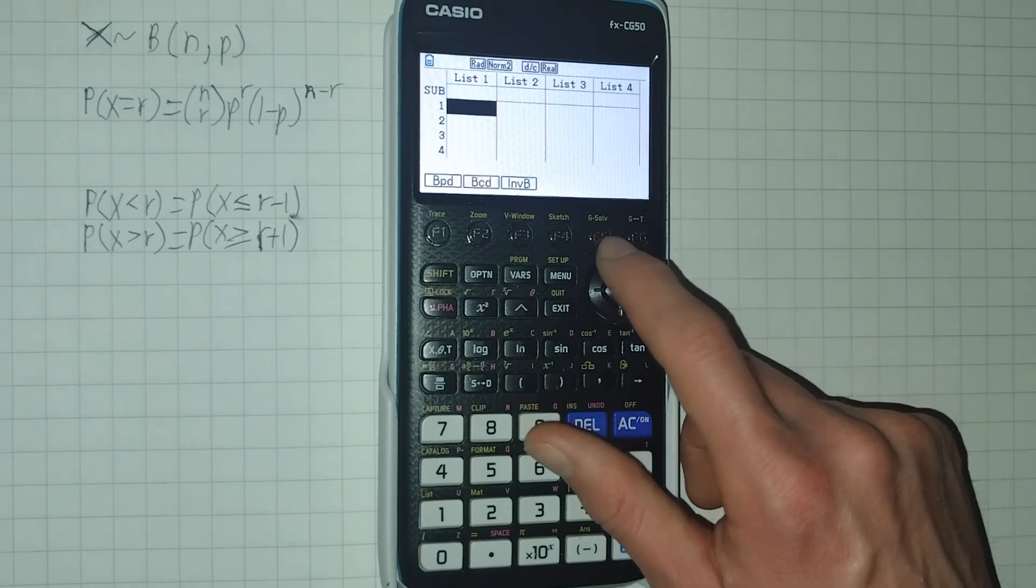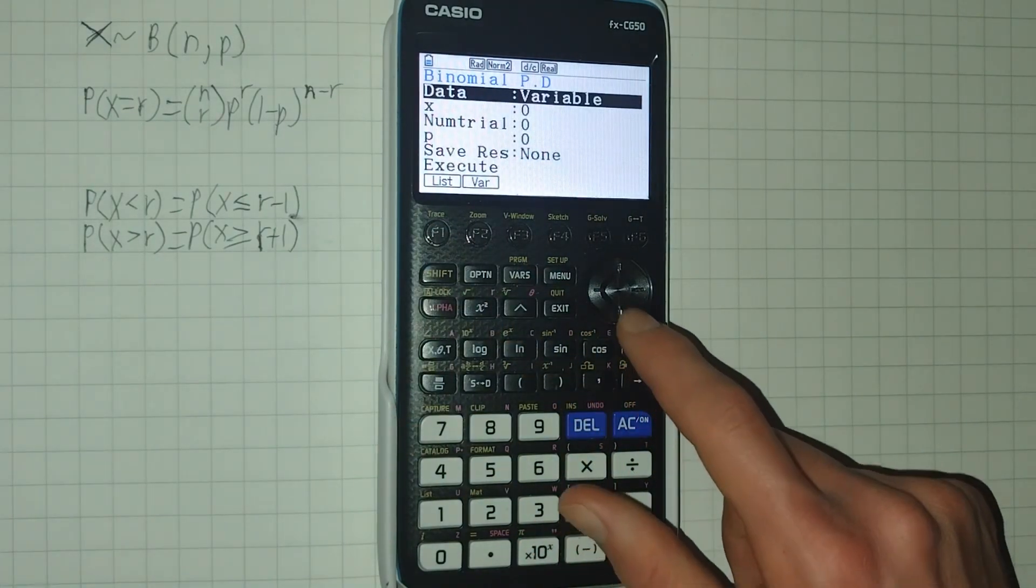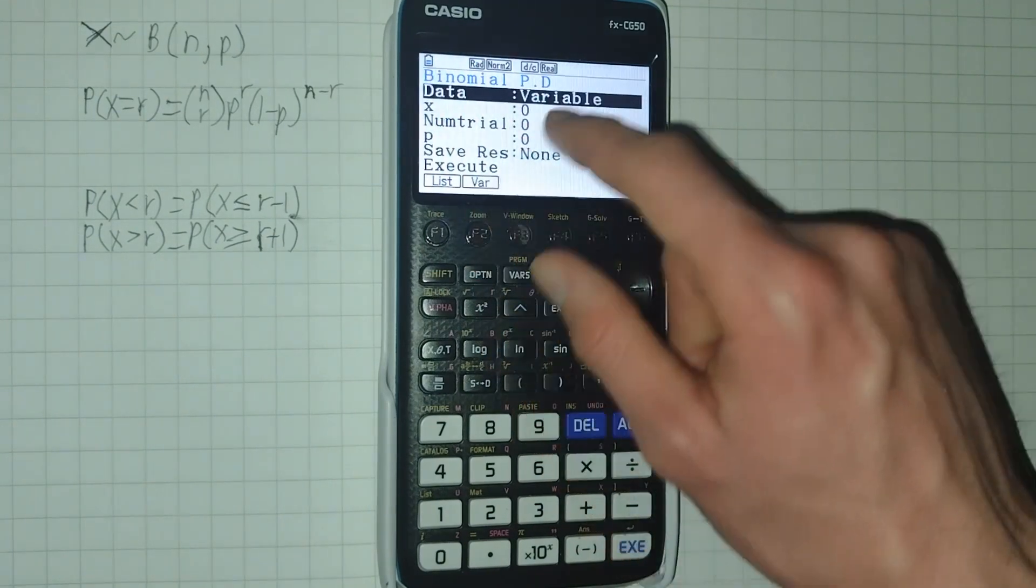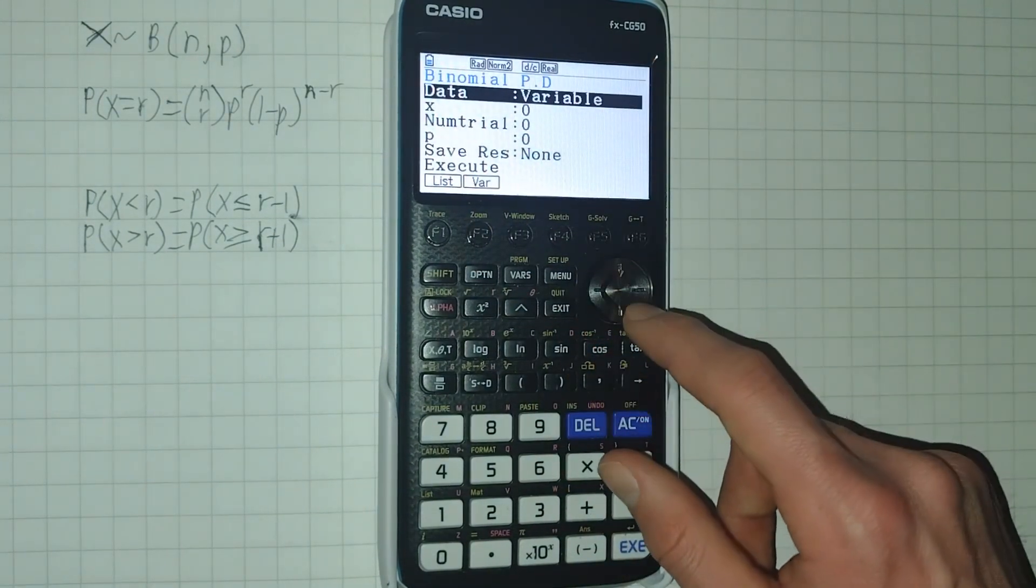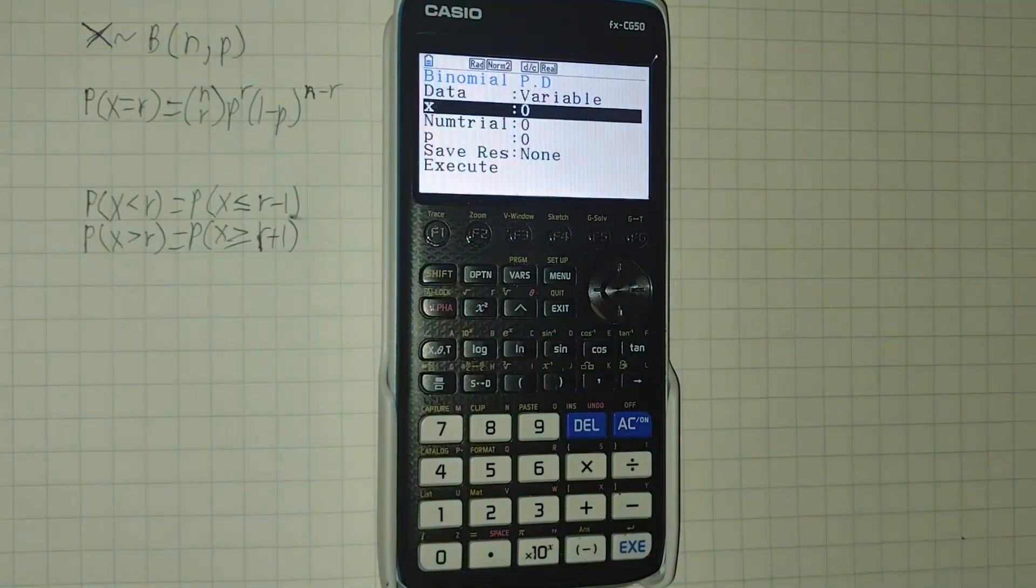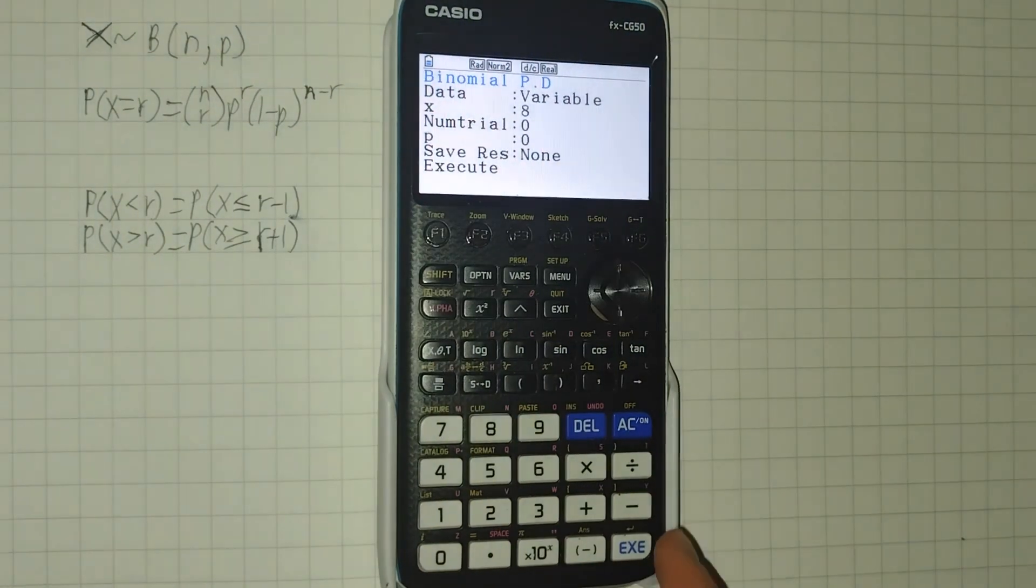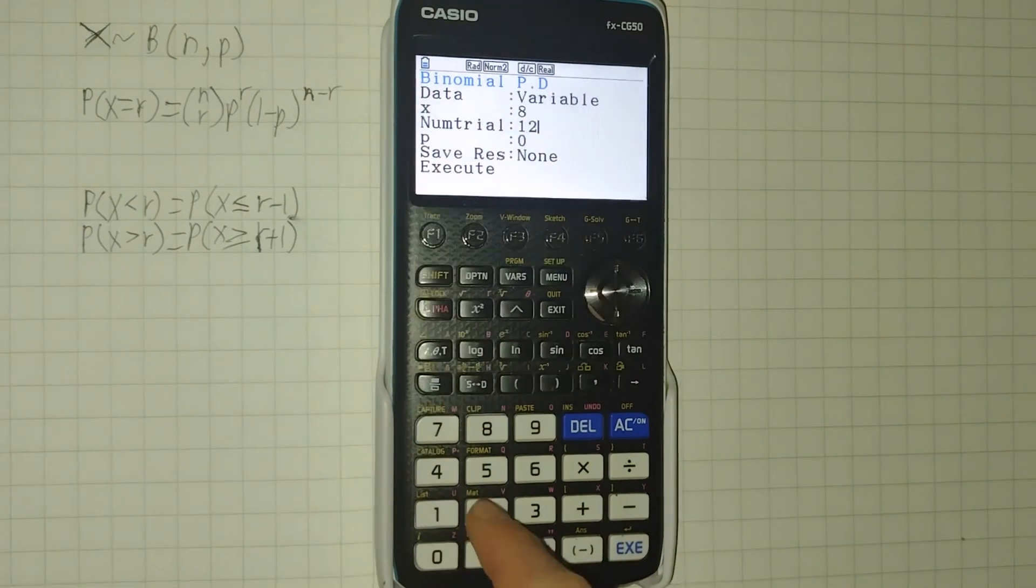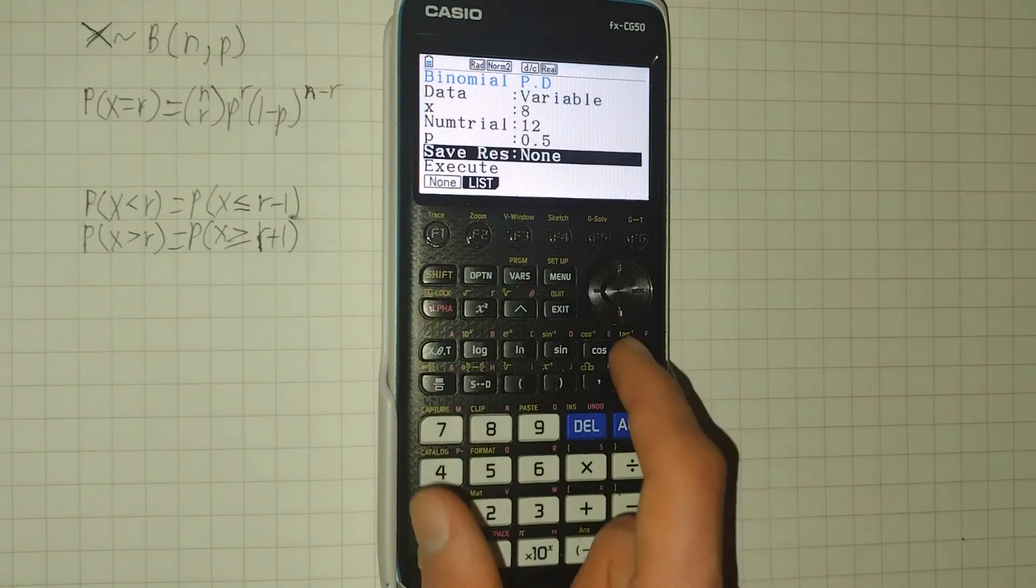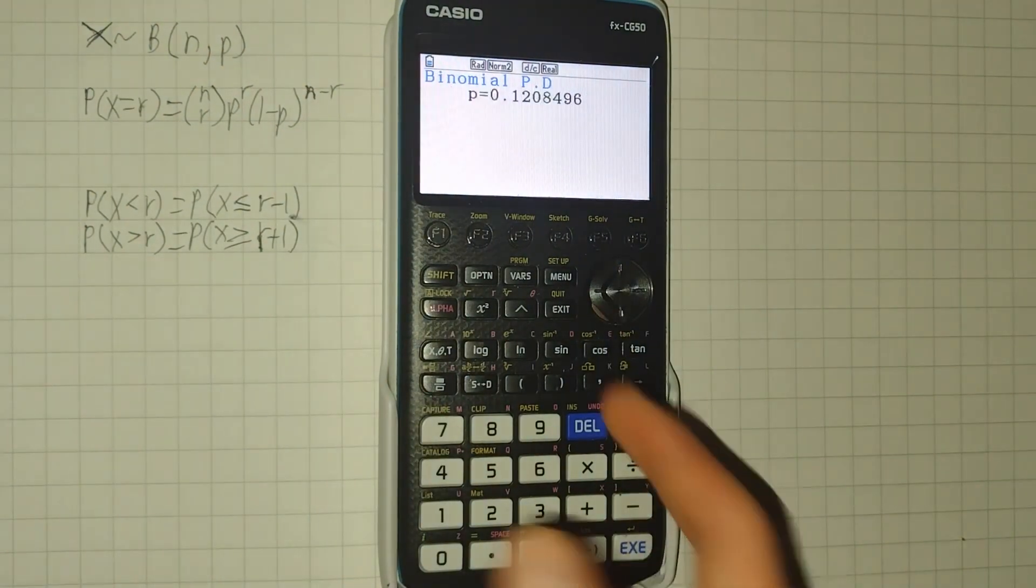So we're then going to select F1 for BPD. Now, at the top here, if this is set to list, you need to click F2 to set it to variable. It should look like this. We can then type in X, so X here is actually our little r. So returning to the flipping a coin example, let's say we want the probability of there being 8 heads when we flip a coin 12 times. The probability of it being a head is half. We can then either scroll down and hit execute, or we can just click execute, and we get our probability. In this case, 0.1208496.